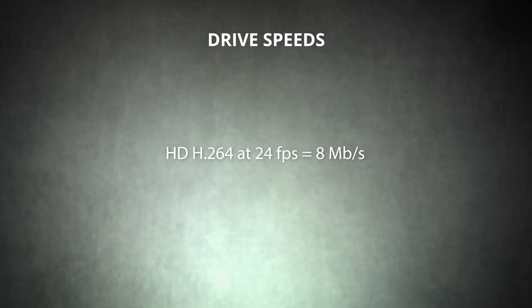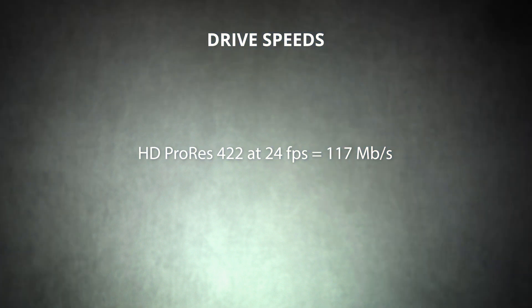With that in mind, you can look at the bitrate of the video files you want to edit to figure out the minimum acceptable read speed for your storage drive. For instance, an HD video shot at 24 frames per second saved as H.264 will have a bitrate of only eight megabits per second — any modern drive will be able to play back multiple streams of this file type. An HD ProRes 422 file has a bitrate of 117 megabits per second, still well within the capabilities of most storage drives.